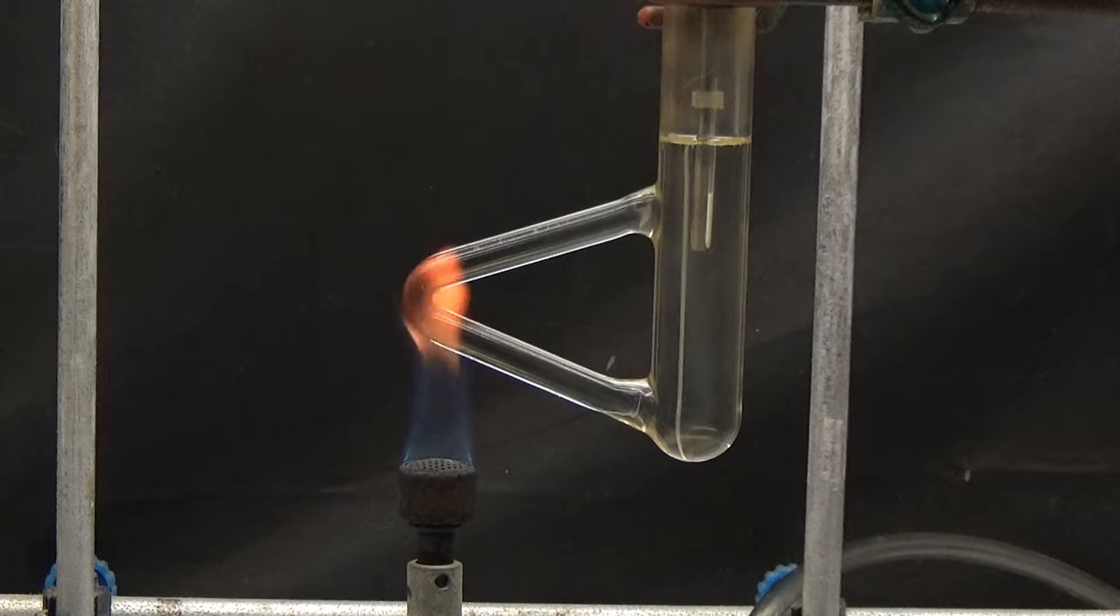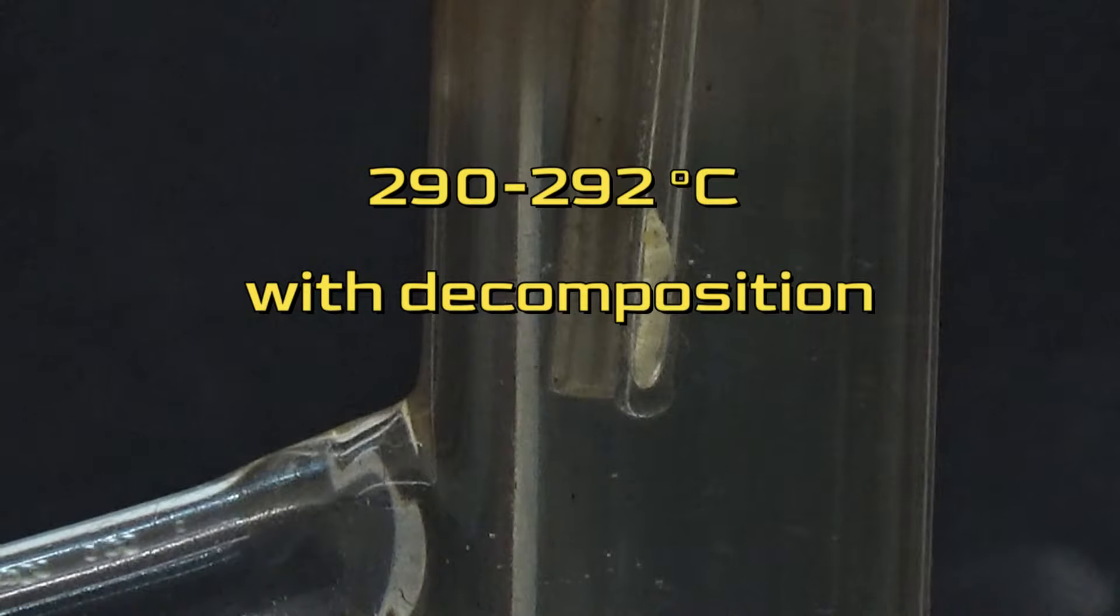After it's dry, we determine the melting point. According to the literature, aminoacetic acid melts at 290 to 292 degrees with decomposition.